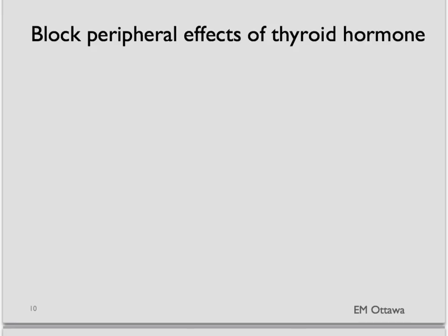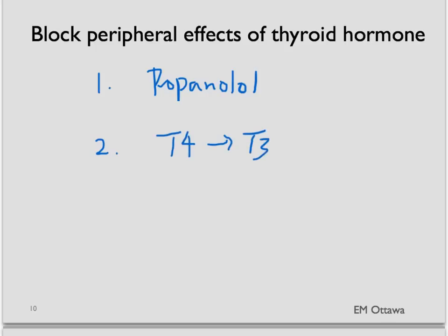The second part of treatment is to block the peripheral effects of the thyroid hormone. First, we treat the tachycardia with a beta blocker — the most commonly used is propranolol. Second, we try to inhibit the peripheral conversion of T4 to T3, since T3 is the active form. We do this by giving a dose of glucocorticoid steroids.